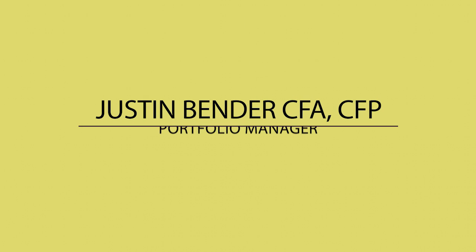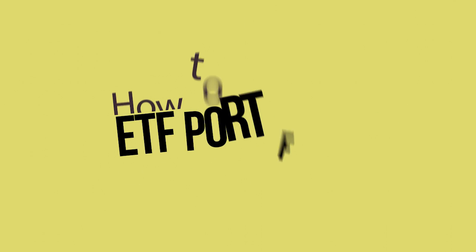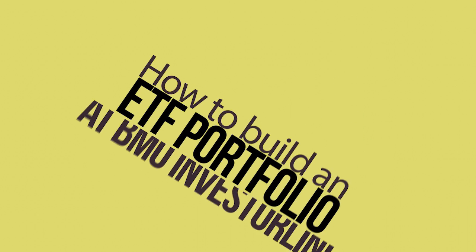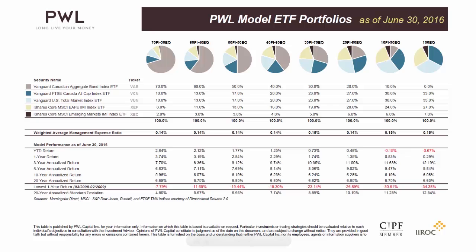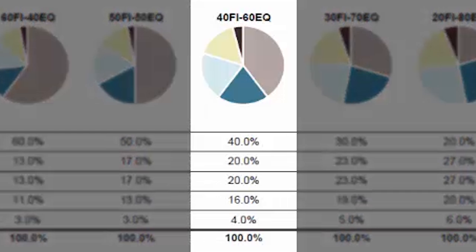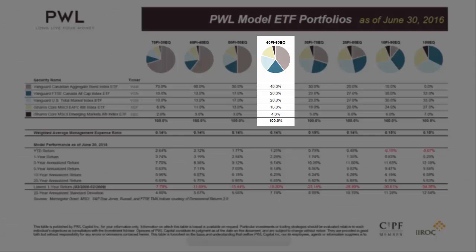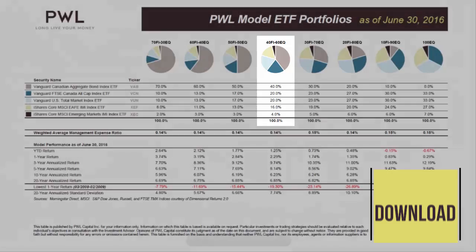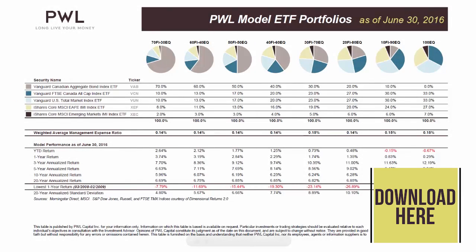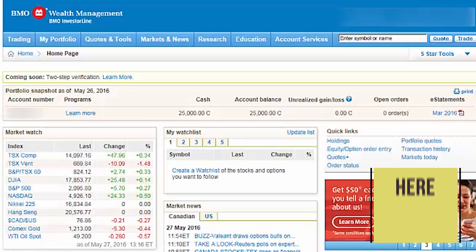Hi, I'm Justin Bender, Portfolio Manager at PWL Capital in Toronto, and this is Episode 2 of my Do-It-Yourself Investing Series. Today's lesson is on how to build an ETF portfolio at BMO Investor Line. We'll be purchasing the 5 ETFs from my 40% fixed income, 60% equity model portfolio. Please feel free to download the model portfolios from my blog before getting started.